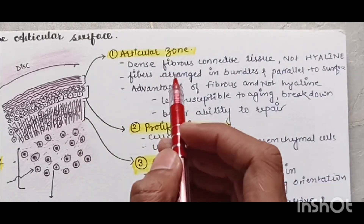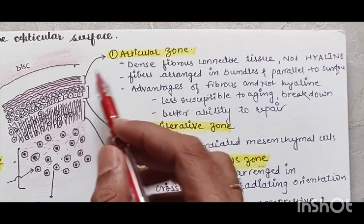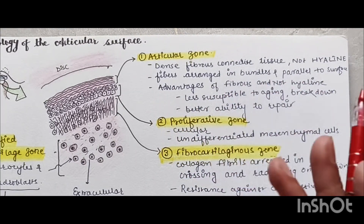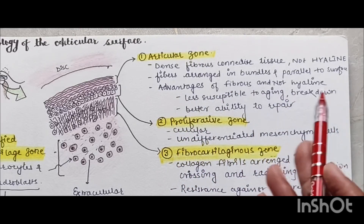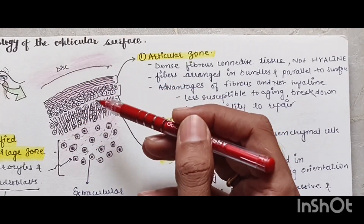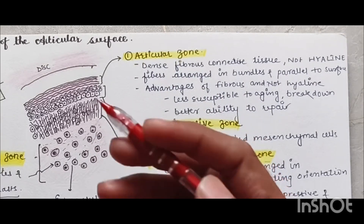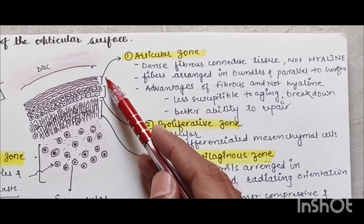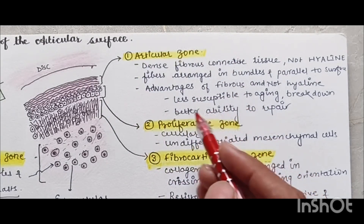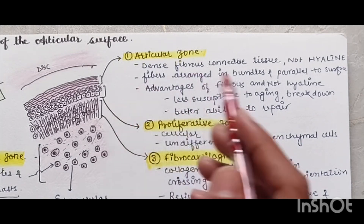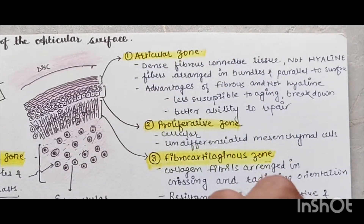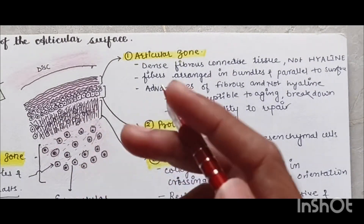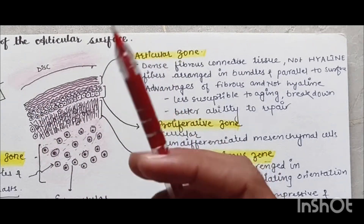The articular zone is not made up of hyaline cartilage for two reasons. First, it is less susceptible to aging breakdown — the TMJ is constantly under load, and hyaline cartilage lacks flexibility and would break down, so fibrous cartilage provides the needed flexibility. Second, fibrous connective tissue has a better ability to repair than hyaline cartilage, which is rigid like glass.